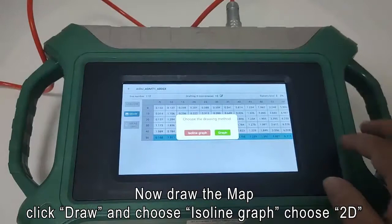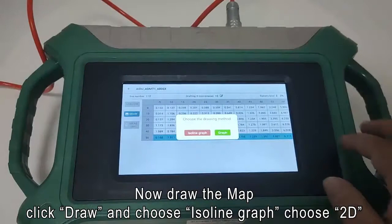Now draw the map. Click draw and choose isoline graph. Choose 2D.